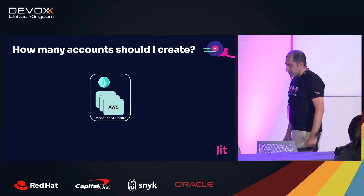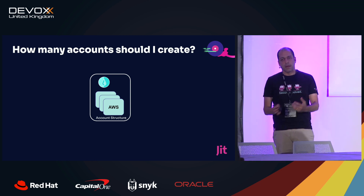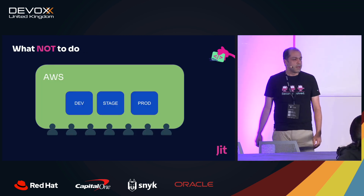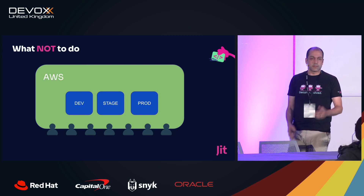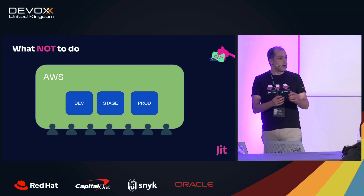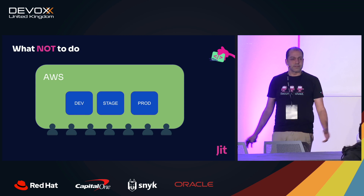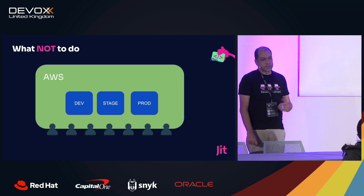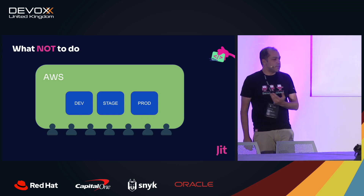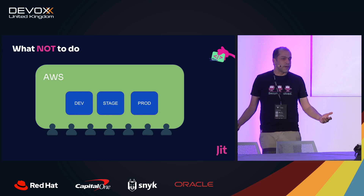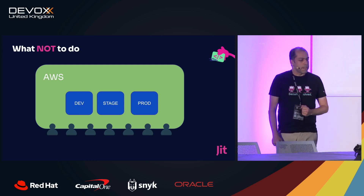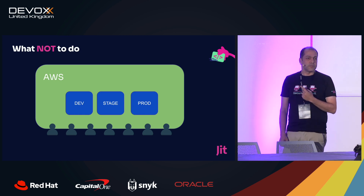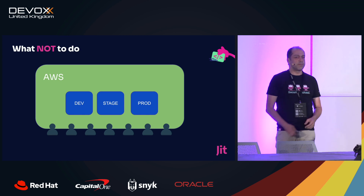Let's dive into the different threats and see how I can build things correctly as code. The first is account structure. Does anyone recognize this anti-pattern — everything in the same account, dev, stage, and production, with all users accessing the same account? You may be tempted by this because it's simple and you don't want overhead, but there's no way to segregate access to different environments — definitely not something you want to encourage.